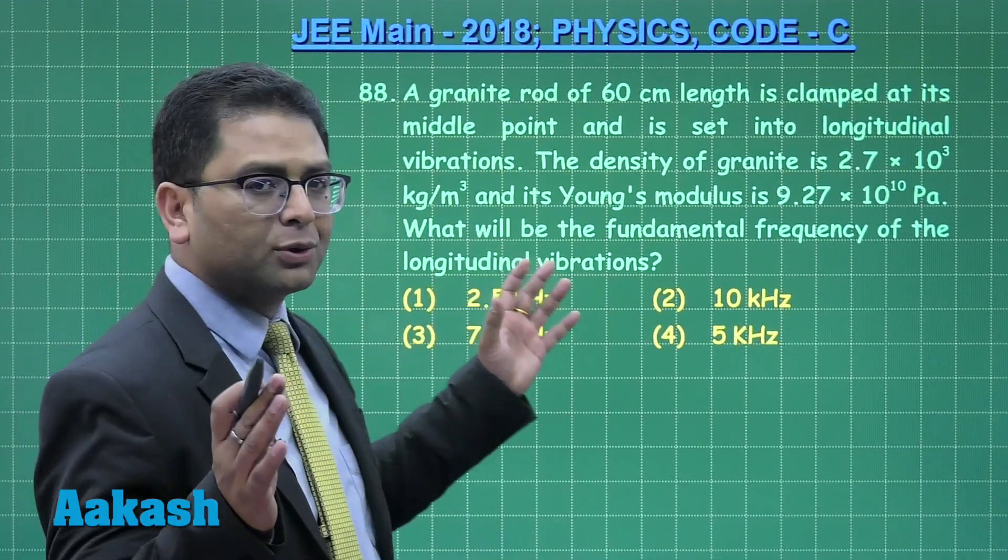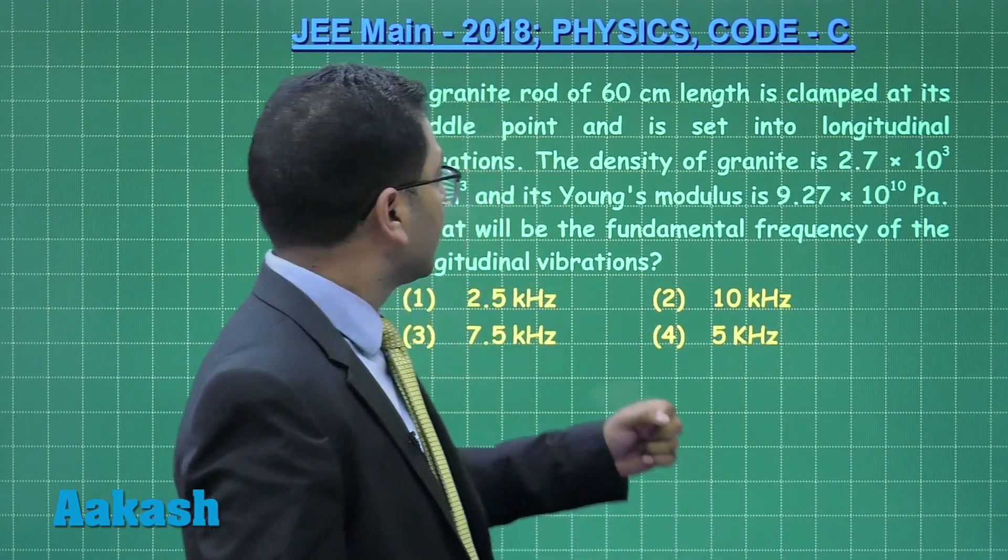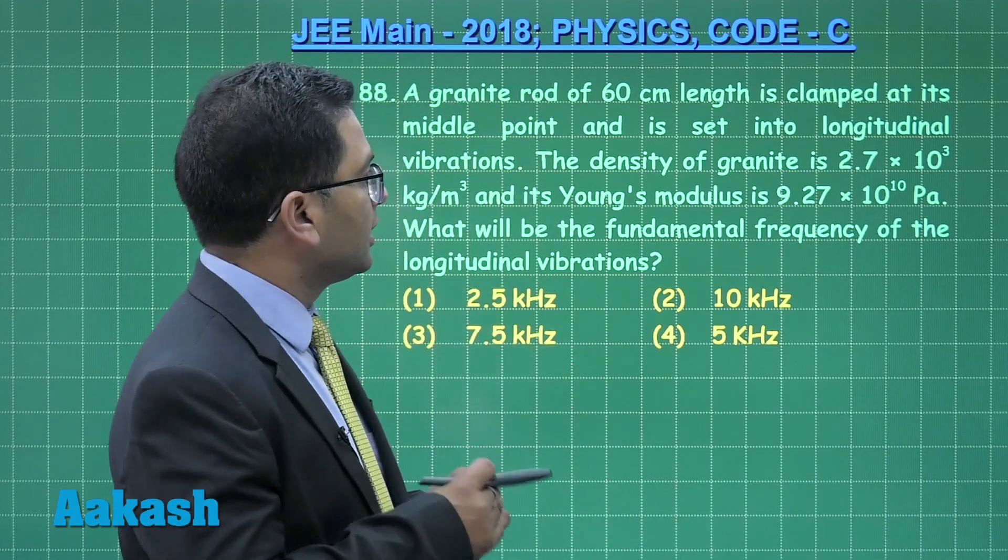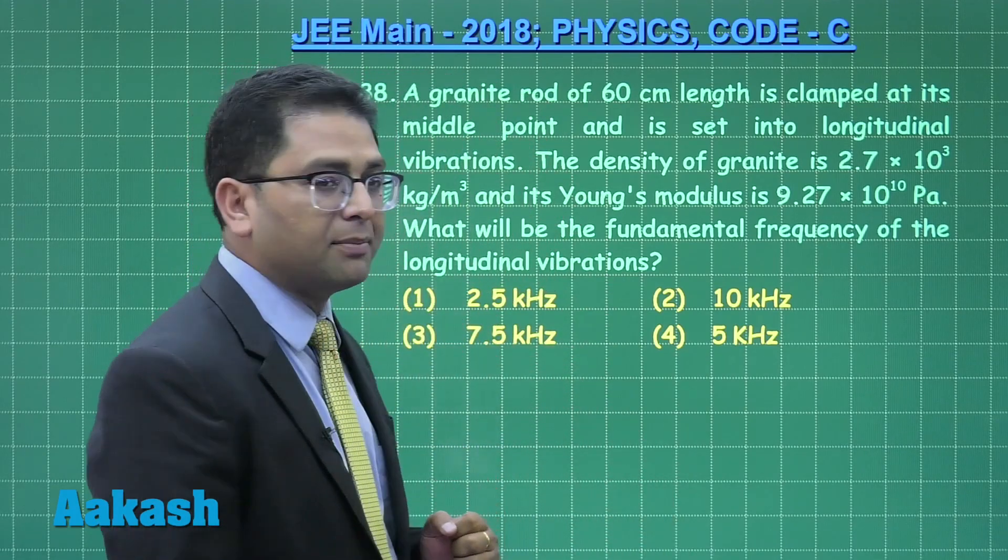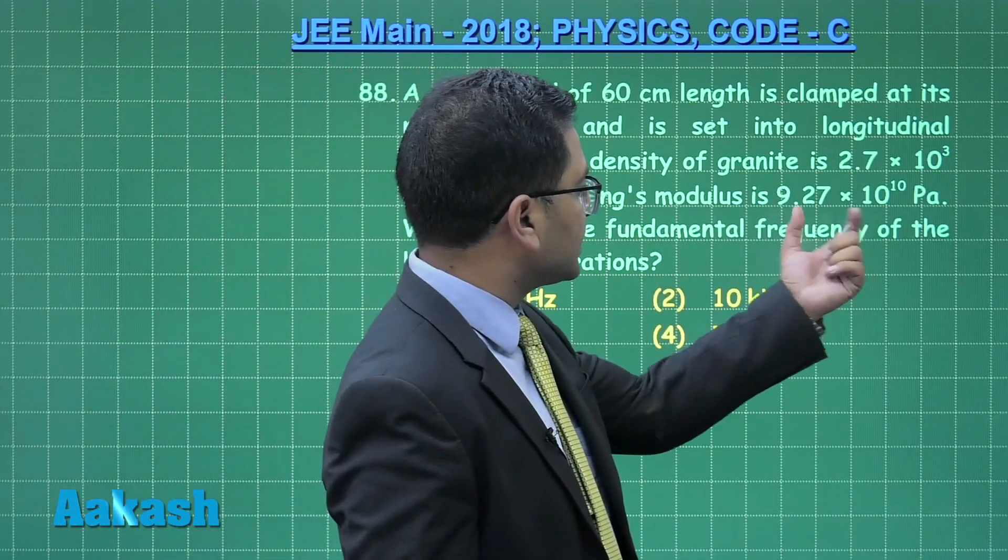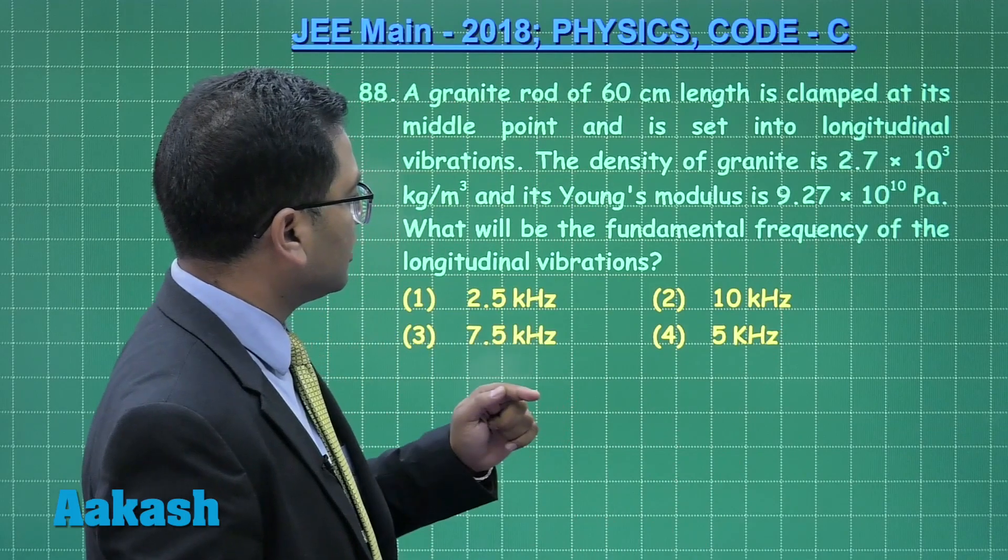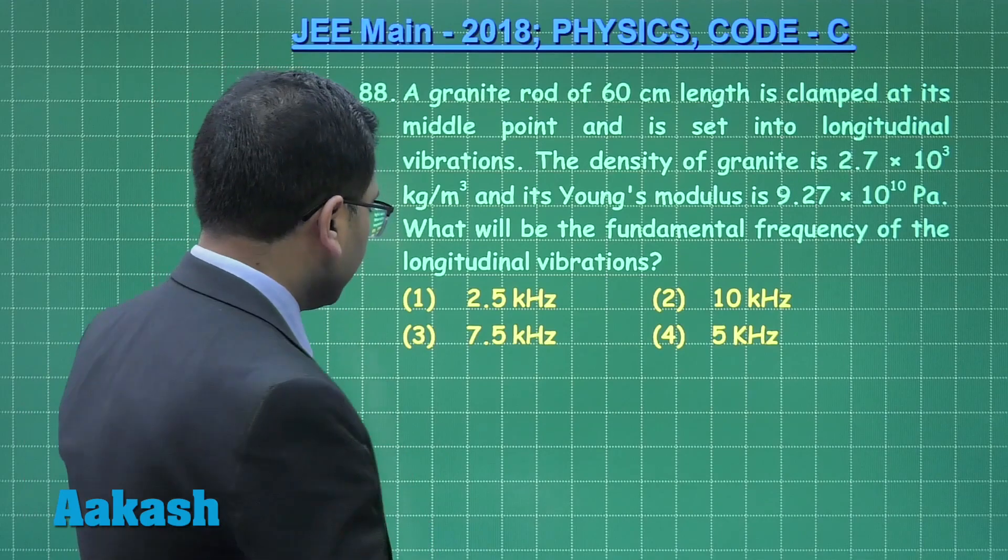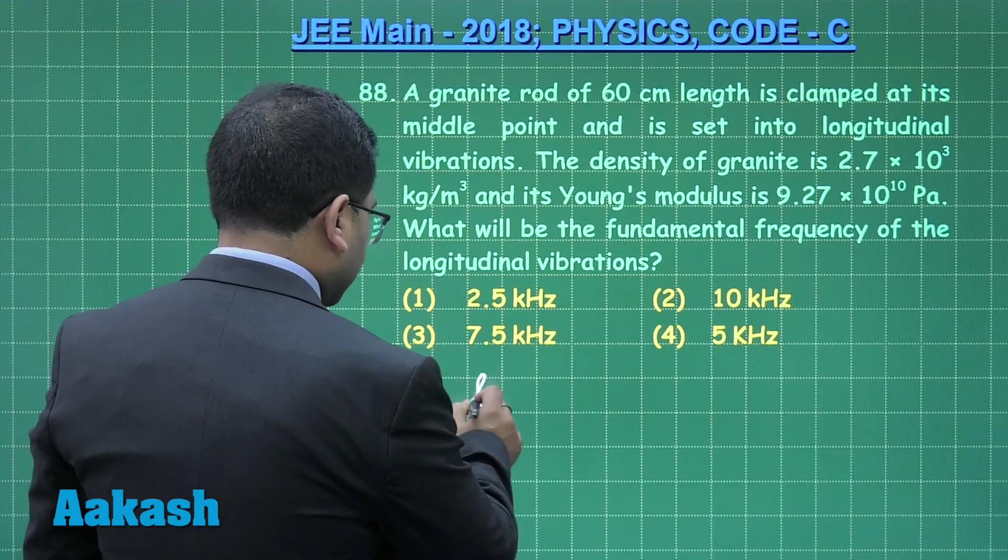Alright guys, let's go for question number 88. A straightforward one derived from the topic waves. A granite rod of 60 centimeter length is clamped at its middle point and is set into longitudinal vibration. The density has been given, the Young's modulus has been given, and we need to calculate the fundamental frequency of the longitudinal vibration.